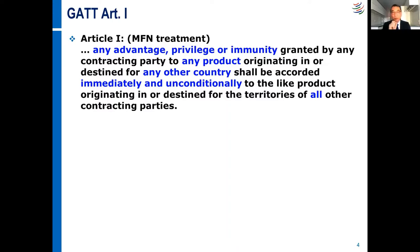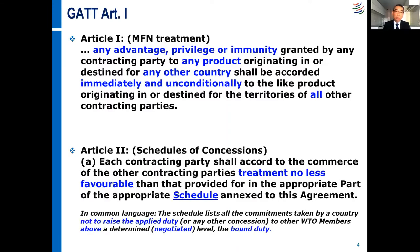In terms of goods, where do we keep these advantages or privileges? They are stored in what we call the schedules of concessions. Article 2 of GATT states that each contracting party shall accord to the commerce of the other contracting parties treatment no less favorable than that provided in the appropriate part of the schedule annexed to this agreement.